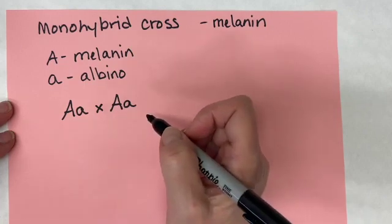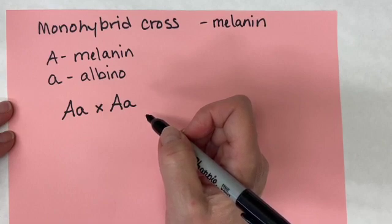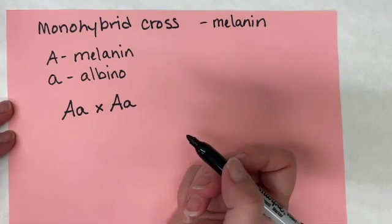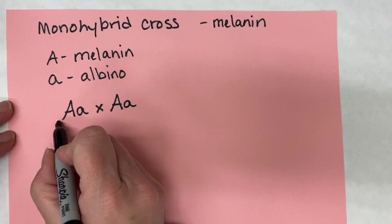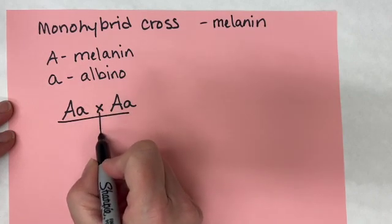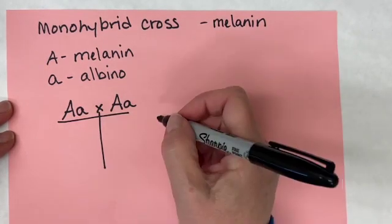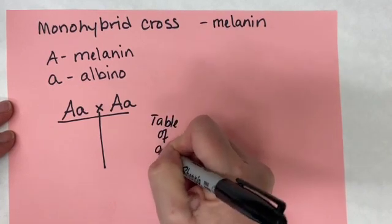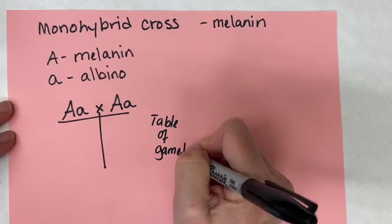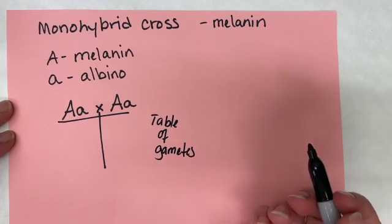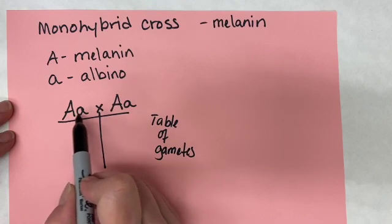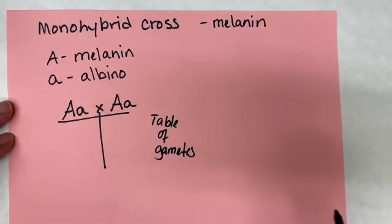When doing Mendelian genetics crosses, it's always a good idea to acknowledge that we make gametes — we're going to go through the process of meiosis. I like to call this the table of gametes. We're going to take our diploid individuals, having two of each allele, and convert them into haploid eggs and sperm.